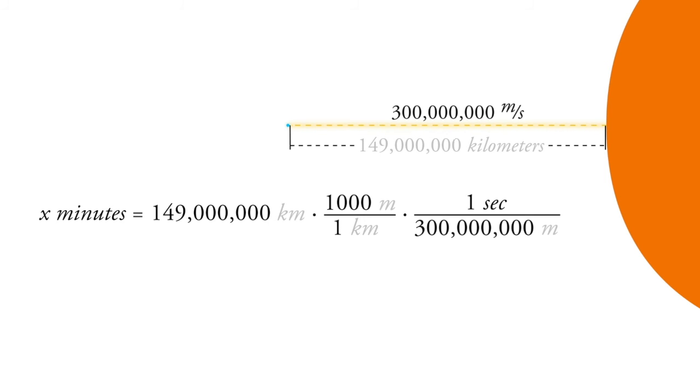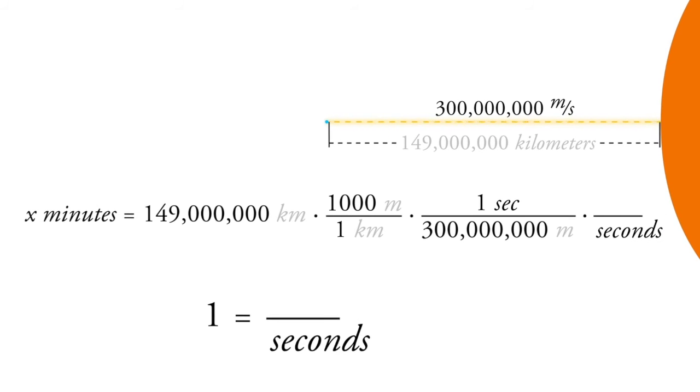But we still have to turn it to minutes. So we'll put seconds on the bottom and minutes on the top, so that these two can cross out eventually. And how many seconds in a minute? Well, there's 60 seconds in one minute. And the reason for this is, you probably already know this, but it can sometimes be a little bit confusing when you're trying to just remember whether to multiply or divide.